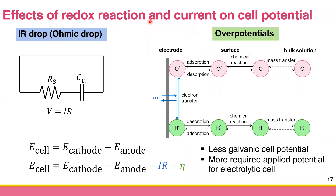In contrast to potentiometry where you don't really need any current, in dynamic electrochemistry you need a significant current. This significant current gives you two things: first, the overpotential, sometimes described with the Greek letter eta; and second, since you have current I and your solution has some resistance R, from Ohm's law you get a voltage V, called the IR drop or ohmic drop.